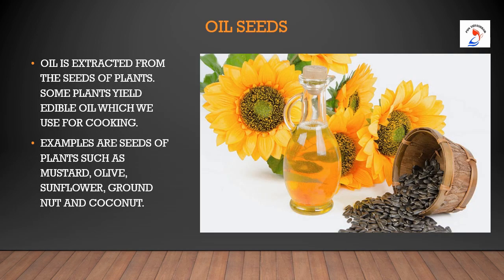Children, do you like chips, curry and vada? We all love to eat them. All these items are fried in oil. From where do we get that oil? Oil is extracted from the seeds of plants. Some plants yield edible oil which we use for cooking. Examples are seeds of mustard, olive, sunflower, groundnut and coconut.